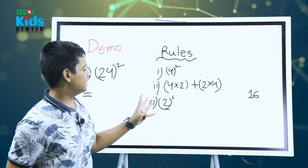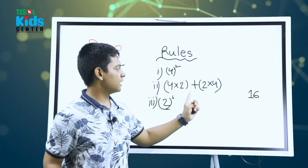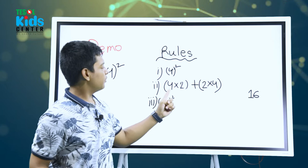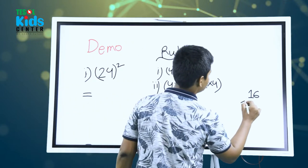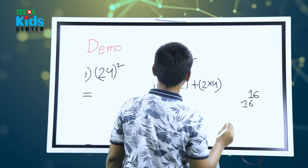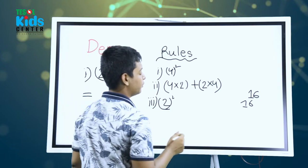And then this one: 4 times 2 plus 2 times 4. 4 times 2 is 8, and 8 plus 8 equals 16. And then 2 squared, which makes 4.